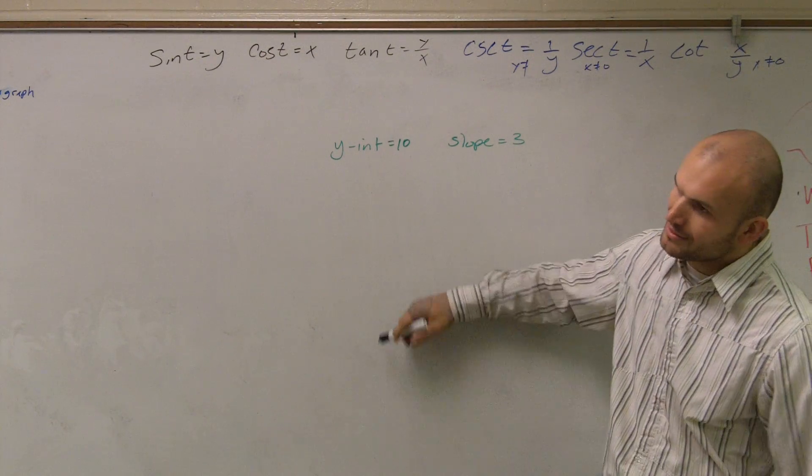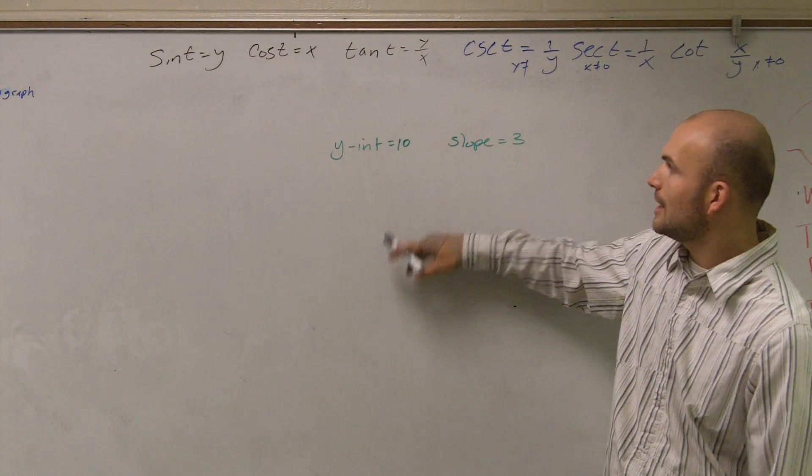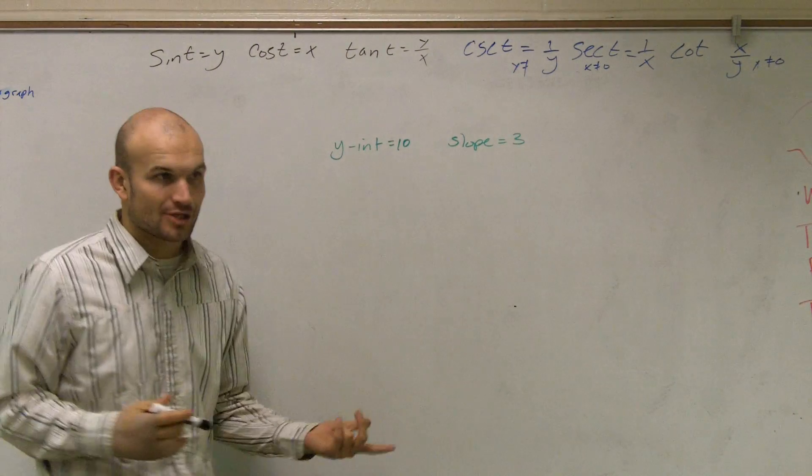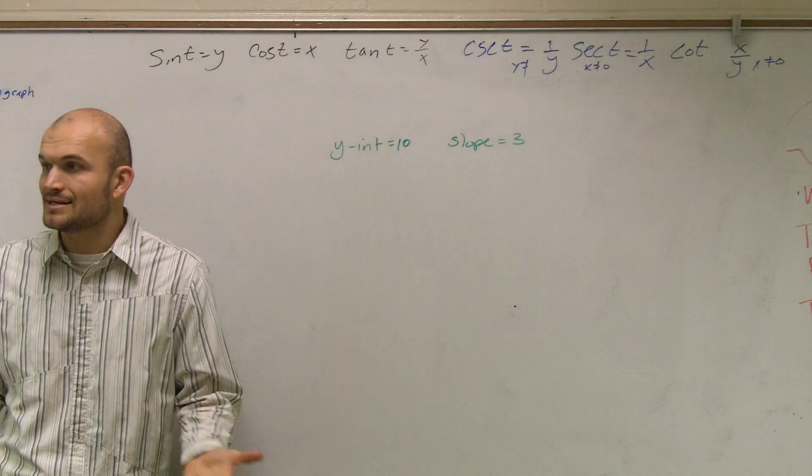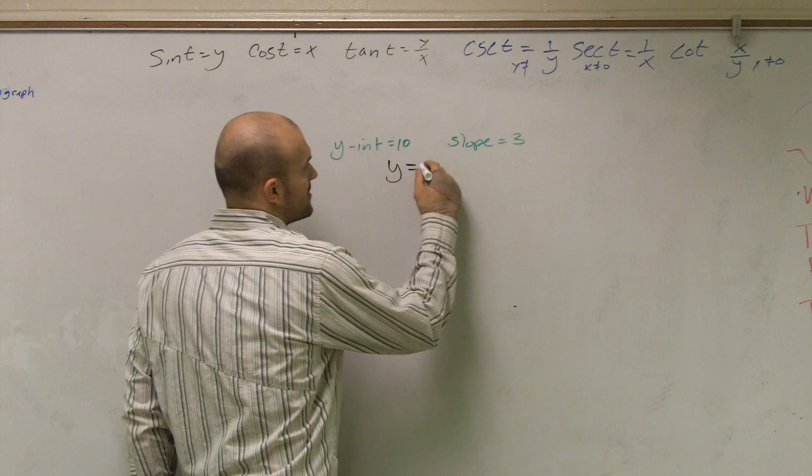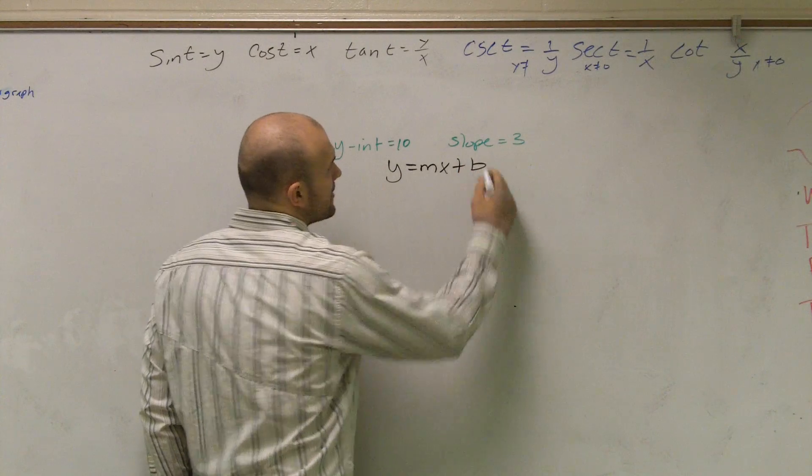The next problem I'd like to do is show you how to graph when you're given the y-intercept and when you're given the slope. Well, the first thing they ask is actually to put it in slope-intercept form. Remember, our slope-intercept form is y equals mx plus b, right?